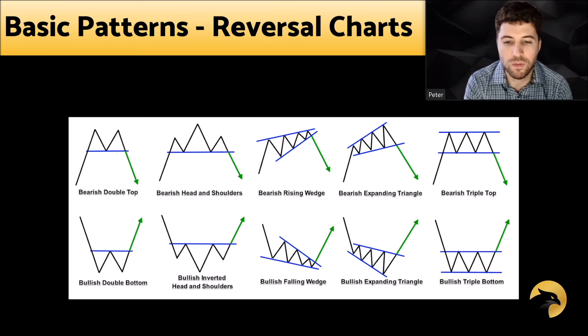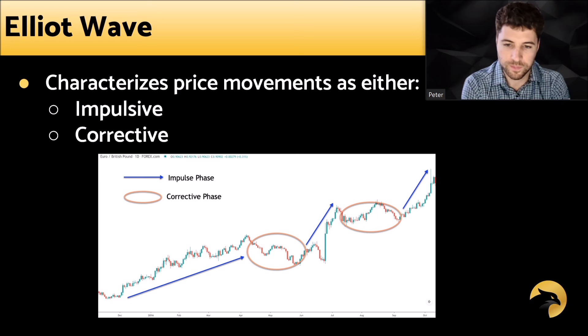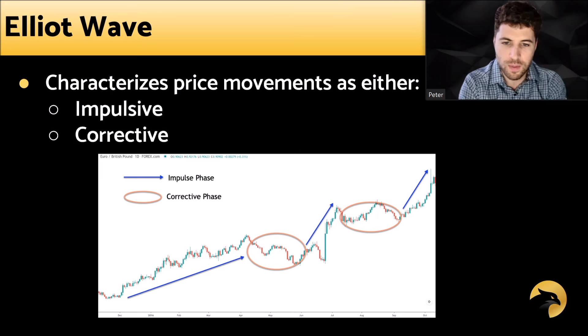Elliott Wave is another discipline that looks at patterns. It characterizes price movements as either impulsive or corrective. Impulsive movements trend, and corrective movements are the corrections for those trending movements. The market is trending upward in this picture — that's an impulsive movement with very particular characteristics. We then see a corrective movement, the market begins to trend up again in another impulsive movement, then corrective, then impulsive. It helps us understand the phases of the market.